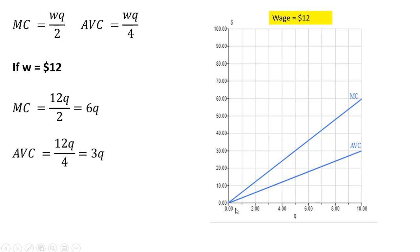So both of these cost curves will start at the origin and then slope upwards. At Q equals 10, for example, marginal cost is $60. And at Q equals 10, average variable cost is $30.